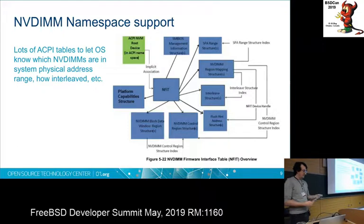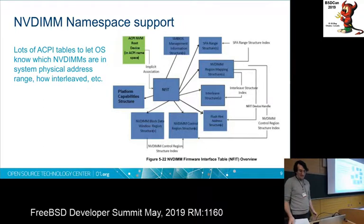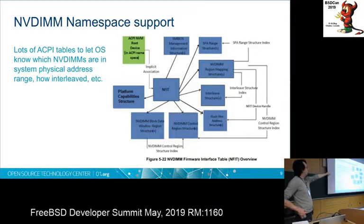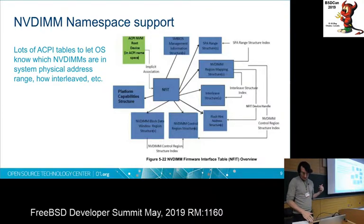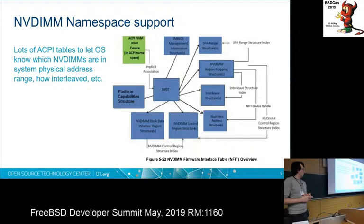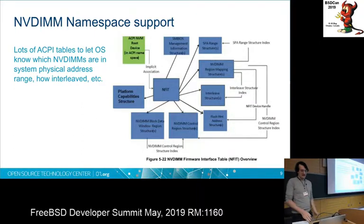The ACPI tables for NVDIMM namespaces are a convoluted octopus of tables, but they're relevant to all NVDIMMs. The SPA range structure and the NVDIMM region mapping structure together express the layout of NVDIMMs in memory, and you take that together with the label data to understand how the namespaces are constructed. We now have support for this. It's a useful NVDIMM feature, but for nice overall NVDIMM support we're also going to want a persistent memory filesystem — and I'm not super sure what that's going to look like, so if you've got ideas I'd love to talk.